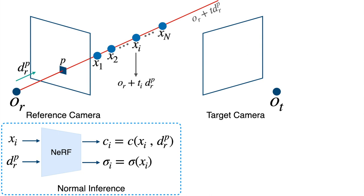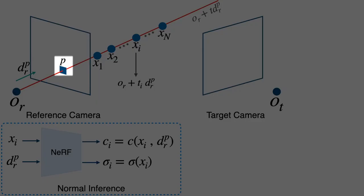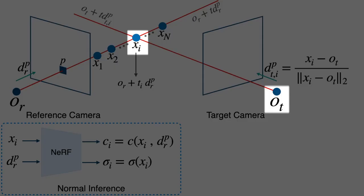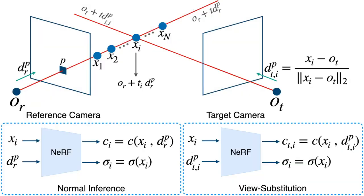However, we are interested in the colors of the scene from a target camera. While rendering the color of pixel p, for each shading point xi, we use the direction of the ray connecting the origin of the target camera and xi and feed that to the NeRF model. This way, we are looking at the scene from the reference camera, but rotating the view directions towards the target camera to get the colors from the target.